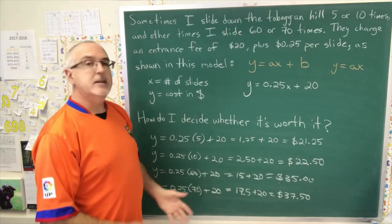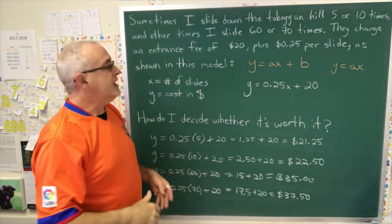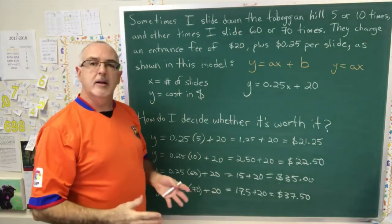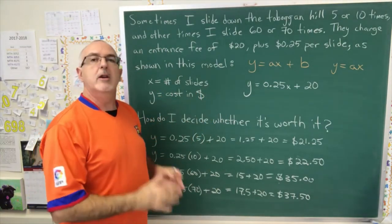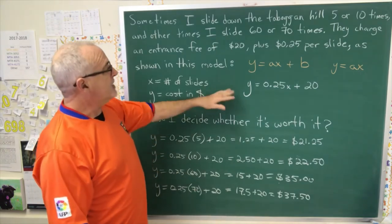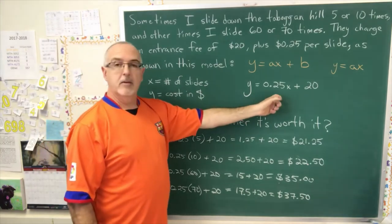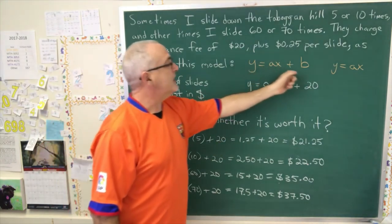This is one of those cases where, because of the rather expensive entrance fee, it's more worth it to use this toboggan hill on a day when you think you're going to use it for a good long time and do a lot of slides. This is a way of analyzing a situation using a given algebraic model in y equals ax plus b form.